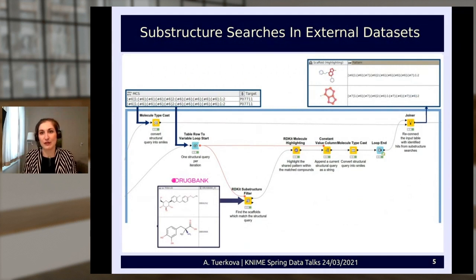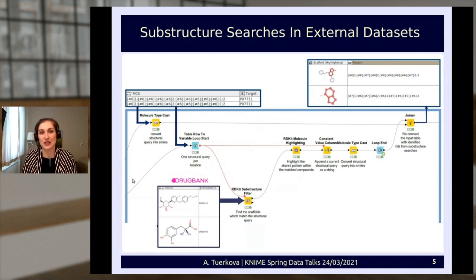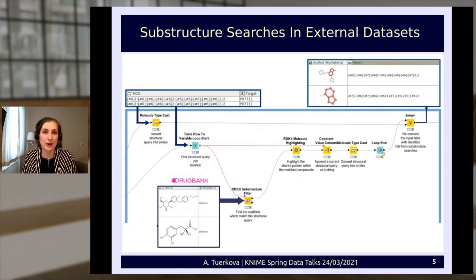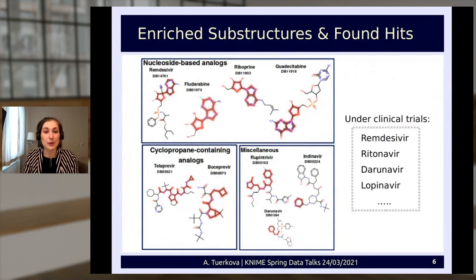For performing substructure searches of external datasets, we created a workflow that takes external compound data as input — in this example, data from DrugBank. We created a loop where each enriched substructure derived in the previous step is taken as input and a substructure filter checks whether it is contained in the uploaded compound data, iteratively. The result is a table of identified hits with compound structures and the found substructure highlighted in red. We used this workflow for different diseases, including COVID-19, and identified several interesting candidates, some of which have already undergone clinical trials.